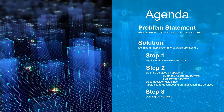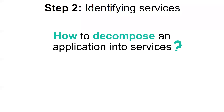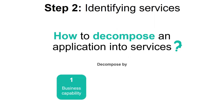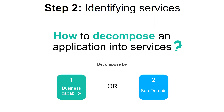Whilst the system operations have been defined, the next step is to identify the application services. Decomposing an application into services could be done following two different decomposition strategies. Each one attacks the problem from a different perspective and uses its own terminology. These strategies are the decomposition using the business capability or the decomposition using the subdomain. With both strategies, the end result is the same: an architecture consisting of services that are primarily organized around business rather than technical concepts.